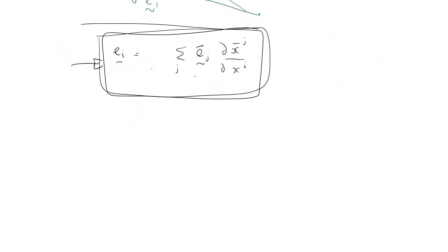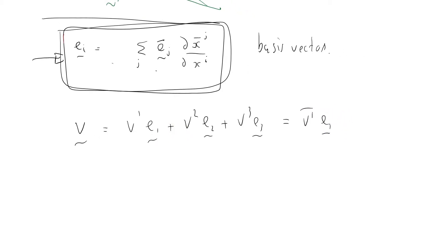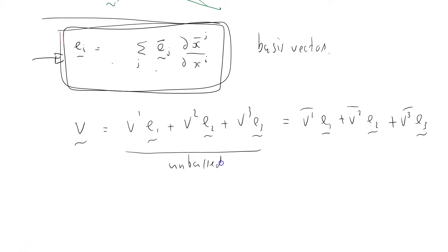Here's my rule for transforming the basis vectors. I've got my vector v and it's going to be equal to v1 e1 plus v2 e2 plus v3 e3, which equals v1 bar e1 bar plus v2 bar e2 bar plus v3 bar e3 bar. This is what it looks like in the unbarred coordinate system, and this one in the barred coordinate system.